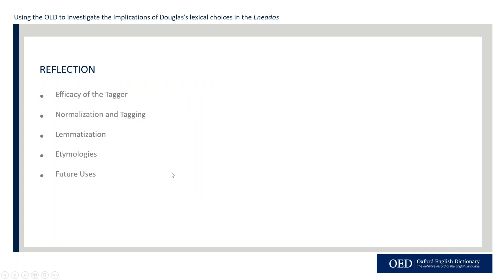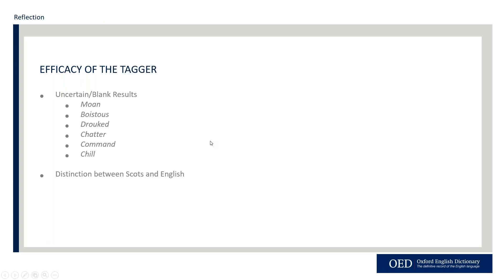I'd now like to spend the rest of my time reflecting on what was done here and how well it worked. I'll be considering the efficacy of the tagger in general, and then specific problems caused by various processes in the methodology. Finally, I'll posit a few ideas about the value of this work and how it might continue. In evaluating how effective the tagger is, the first obvious measure is how big the coverage is. In our case, this tagger had very good coverage with only 1% of results coming back as uncertain or blank. However, 1% of such a big data set still equates to almost 2,000 words, which is no small amount.